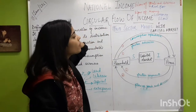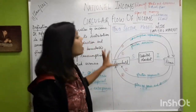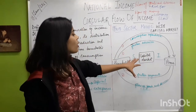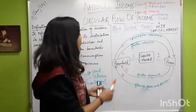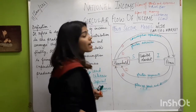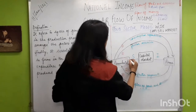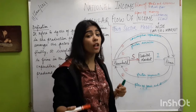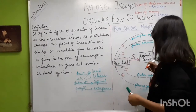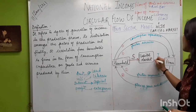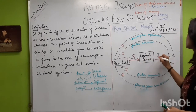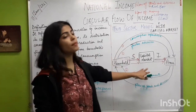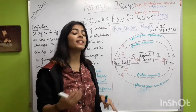Now when we start the two-sector model with a capital market, there is an additional party called the capital market, which is just like a bank. When the household has extra money, they will save it in the capital market. When the firm needs money, it takes it as investment from the capital market. So we have two-sector model without capital market and two-sector model with capital market.